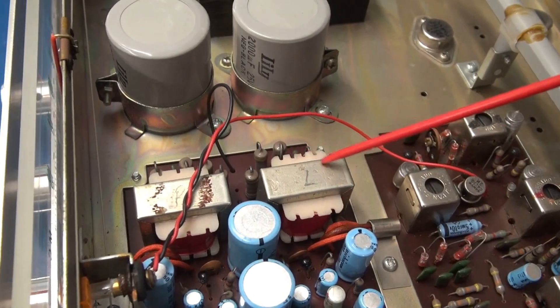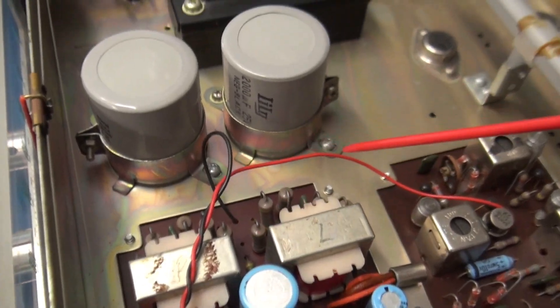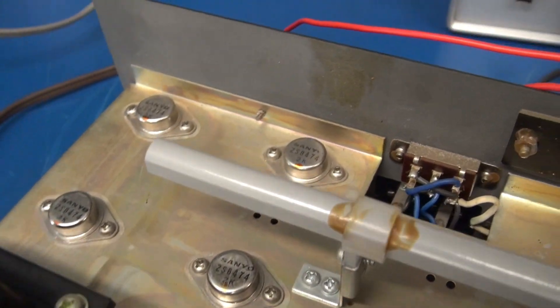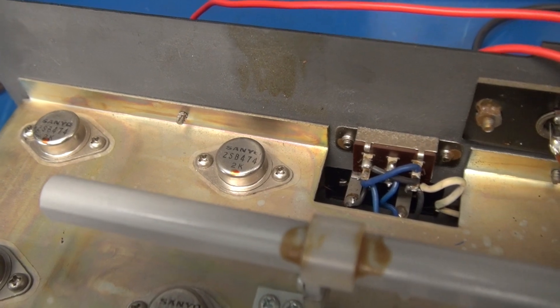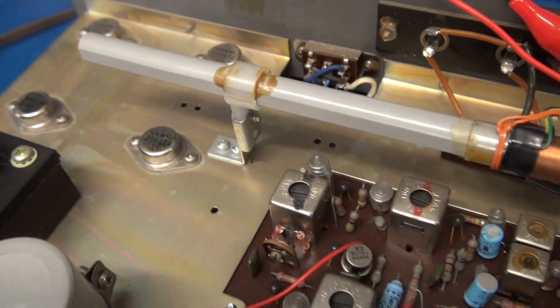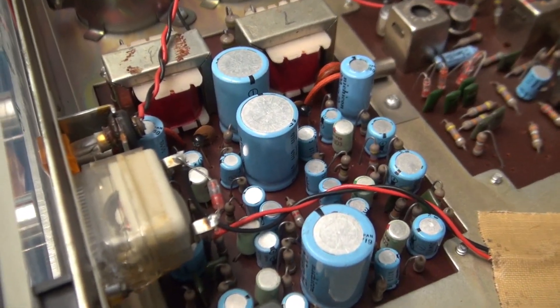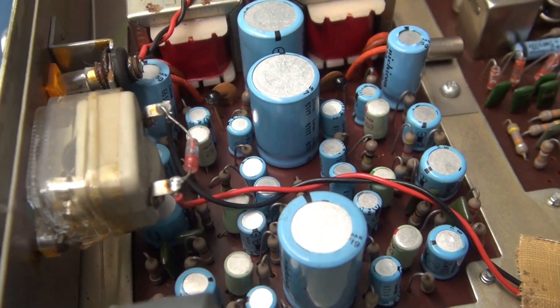And they have some transformer coupling. You can see the driver transistors and that drives these Sanyos which are 2SB 474s. Like I say, everything appears stock, so I suspect we've either got some dried up coupling caps and hopefully not a bad transistor because they are tough to find.